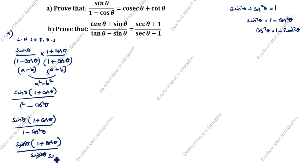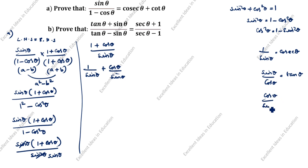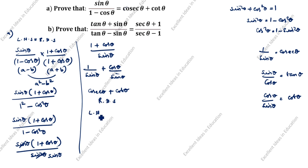Here one sin cancels, and one sin remains. So we get 1 plus cos theta divided by sin theta. We will split this: 1 by sin theta plus cos theta divided by sin theta. Now, 1 by sin theta is cosecant theta, and cos theta by sin theta is cot theta. So we get cosecant theta plus cot theta. You see here LHS equals RHS — this is the RHS. Hence proved.